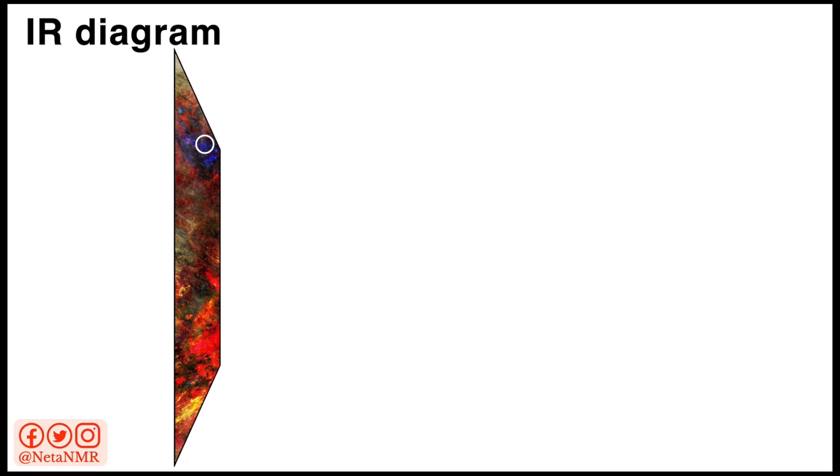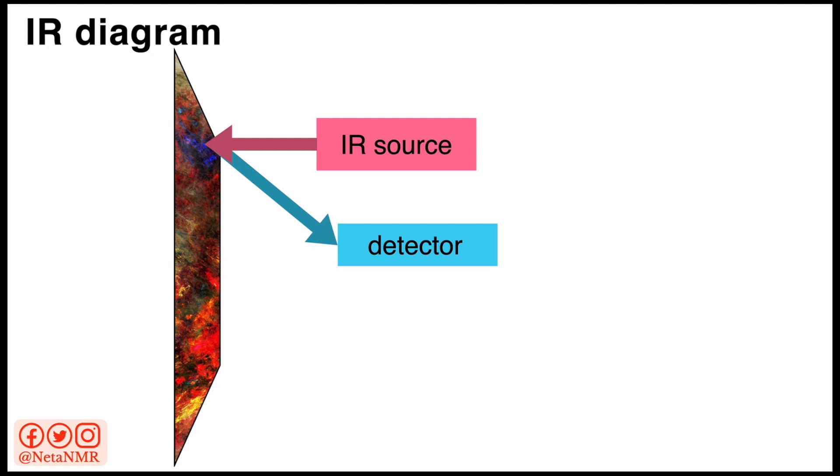First, we select which area of the painting we want to investigate. And then we shine the beam of infrared light from the IR source in the instrument and onto the area we want to investigate. After we send the IR beam into the sample, we then record, with the help of a detector, how much of that radiation is transmitted through to the detector after the molecules of the sample absorb the radiation of certain frequencies.